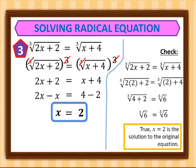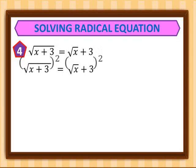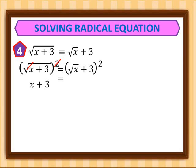For the fourth example, we have the square root of x plus 3 equals the square root of x plus 3. Note that on the left side, the 3 is part of the radicand, but on the right side, the 3 is outside the radical. We square both sides, canceling the left radical, leaving x plus 3 on the left. On the right, we need to square the binomial square root of x plus 3.